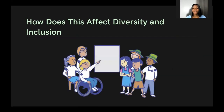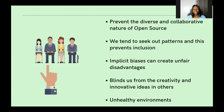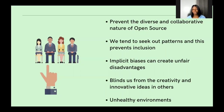How does implicit bias affect diversity and inclusion in open source? First, it prevents the diverse and collaborative nature of open source. Open source relies on collaboration from different individuals and groups. If we let implicit bias take hold, we block pathways for other persons to get on board and collaborate on projects. It also causes us to seek out repetitive patterns, which prevents inclusion — following the same format year after year without updating the process.